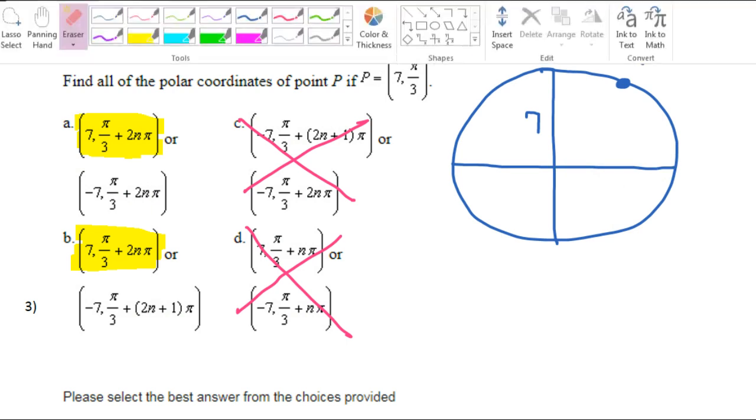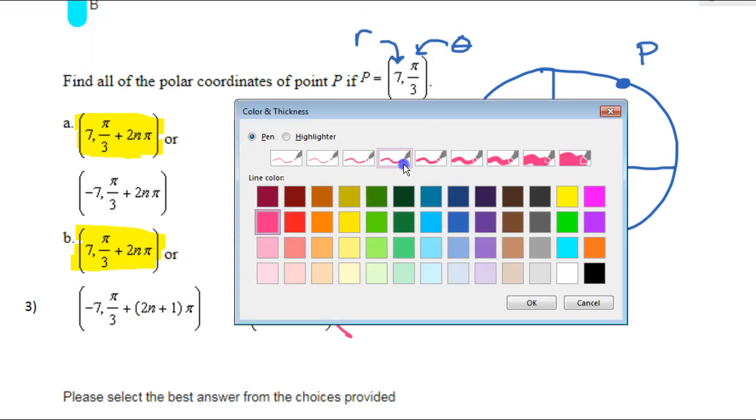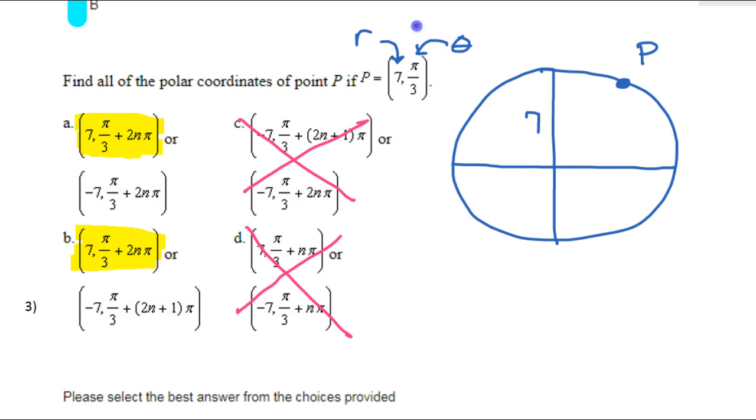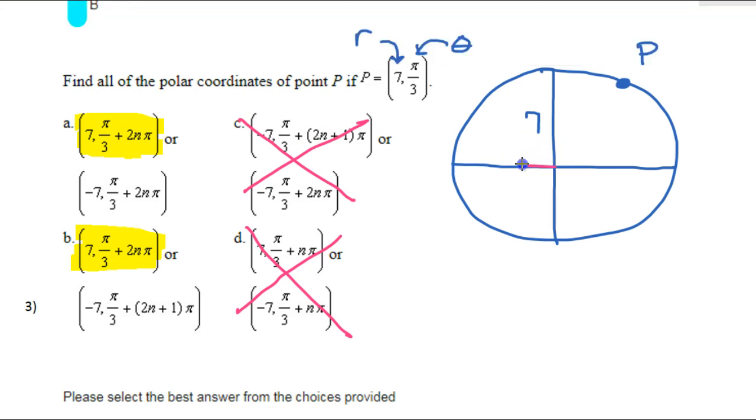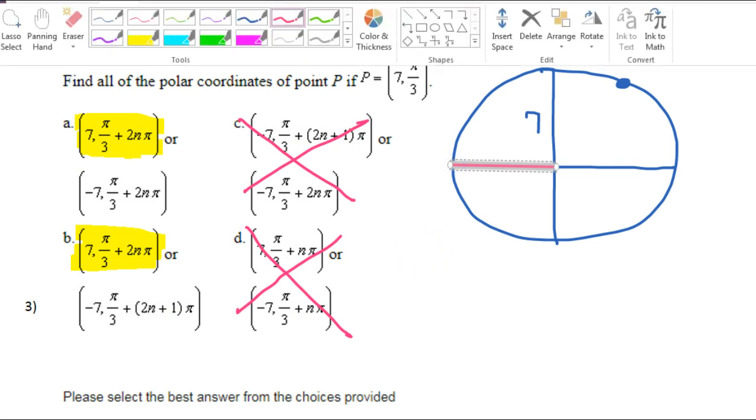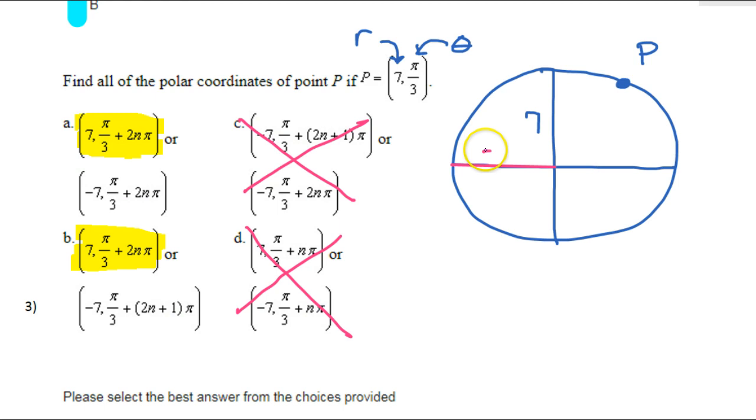However, if we go to the left, and I'm going to color this red to show that it's negative, if we go to the left instead of the right, now, this is a negative 7. To the right was a positive 7. Starting off to the left is considered to be a negative 7. Now, where do I have to rotate to get back to the point?